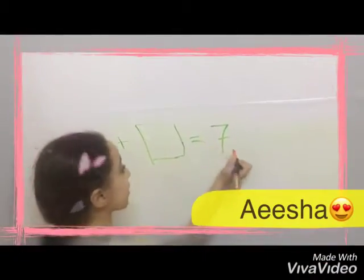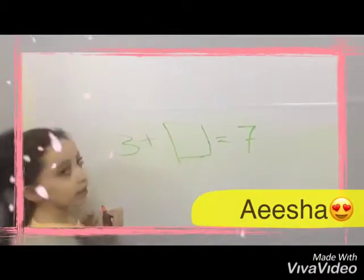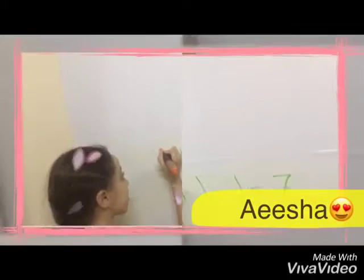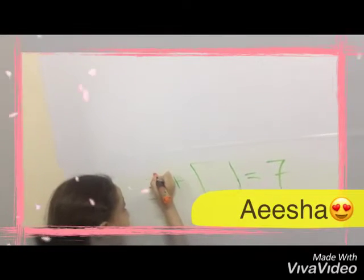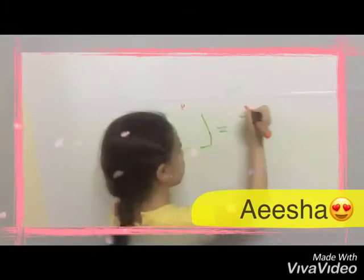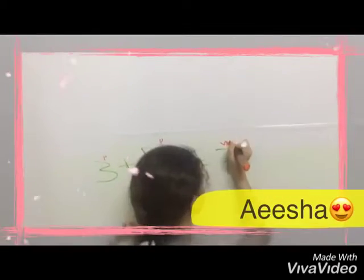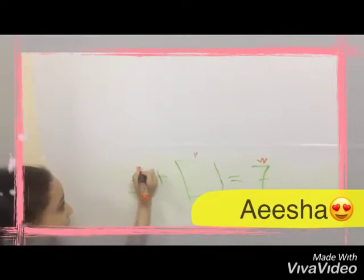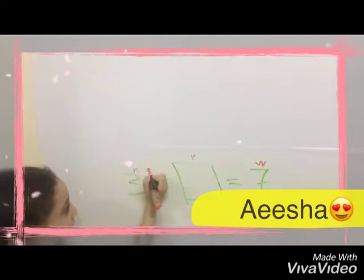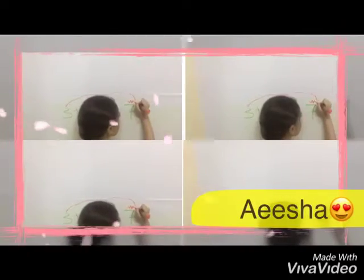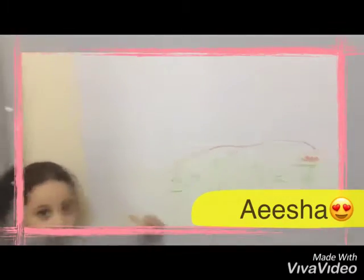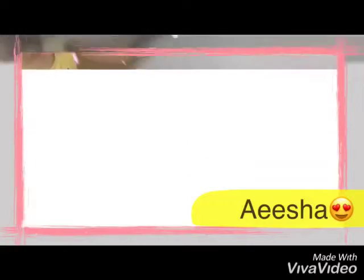5 plus what equals 7? Bart. Page and count on. After 5: 6, 7. 3, 4, 5, 6, 7.